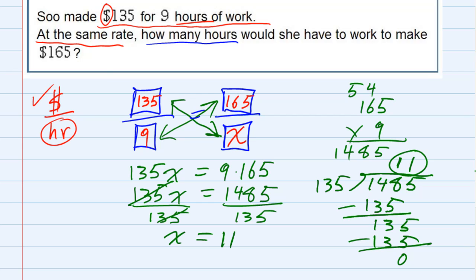How many hours would she have to work? She would have to work 11 hours to make $165. And hopefully that makes a little bit of sense, because if in 9 hours she made $135, she's definitely going to have to work longer. And as we found out, she has to work 11 hours to make the $165.